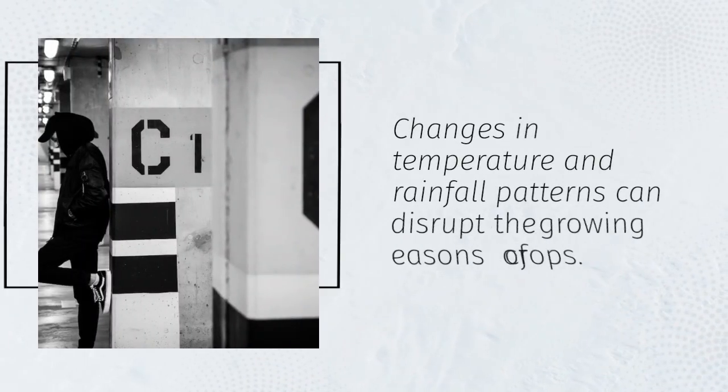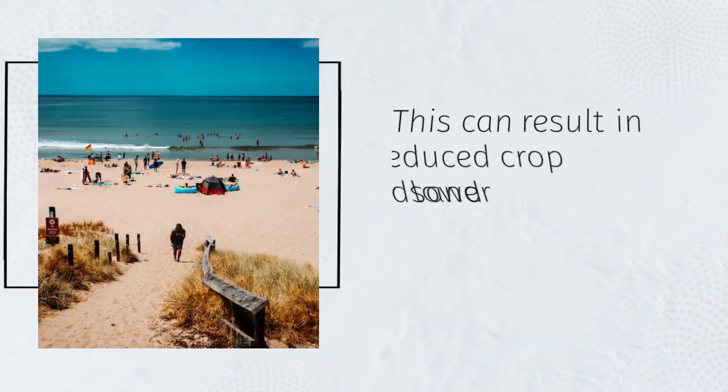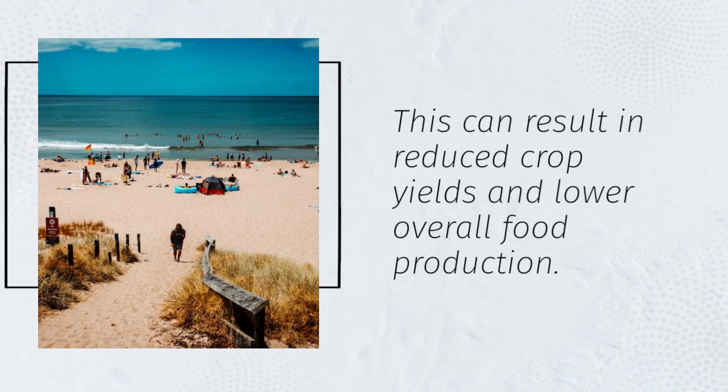Changes in temperature and rainfall patterns can disrupt the growing seasons of crops. This can result in reduced crop yields and lower overall food production.